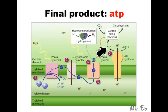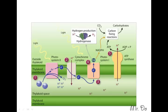The final product of this whole chain is simply to create ATP. Now in order to create ATP, you have to pump hydrogen atoms across the protein to create ATP.